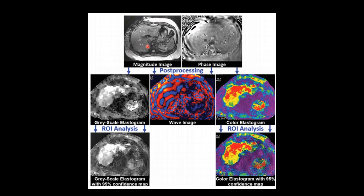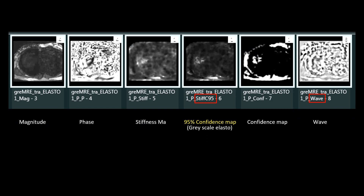We acquire images in the form of magnitude and phase images, which undergo post-processing steps and give us the main elastogram images: the wave image and the color elastogram. Over the color elastogram there is a 95% confidence map overlapped, which leaves out areas with artifacts and retains the liver parenchyma, so that we can draw a region of interest (ROI) over this and quantify liver stiffness. We also have wave images to assess the waves.